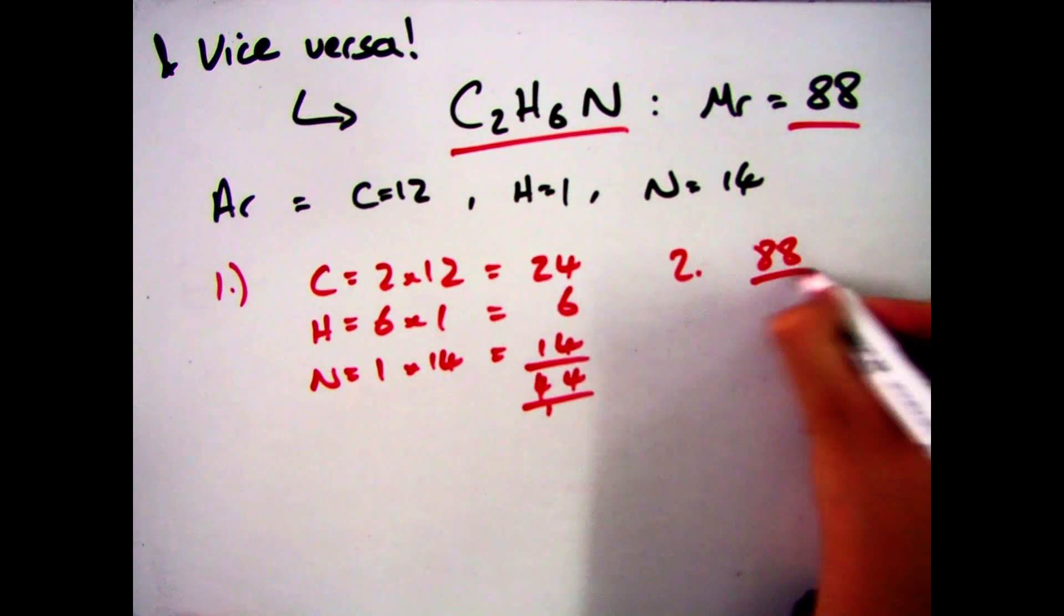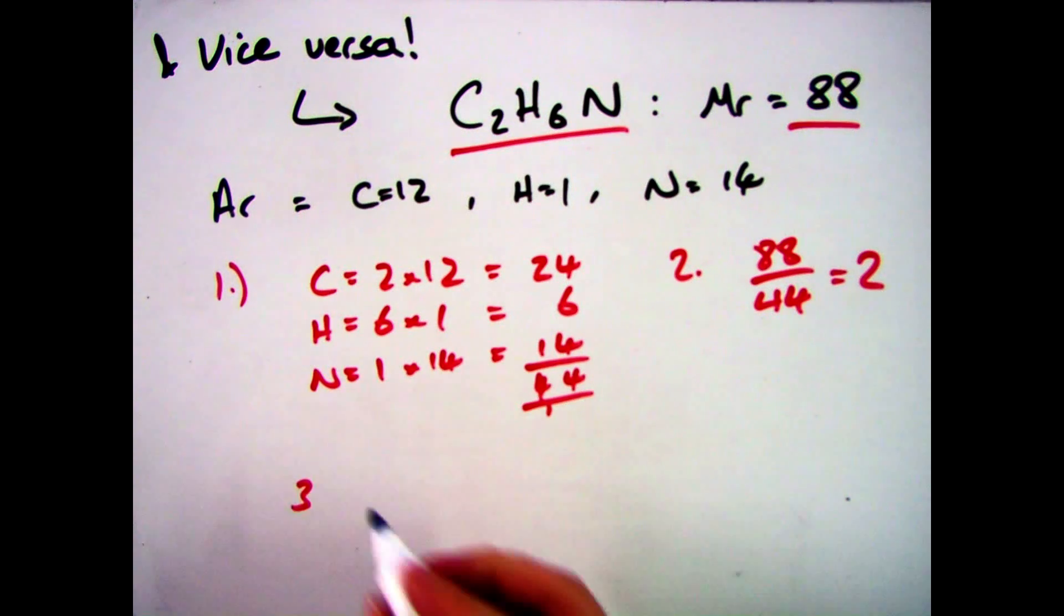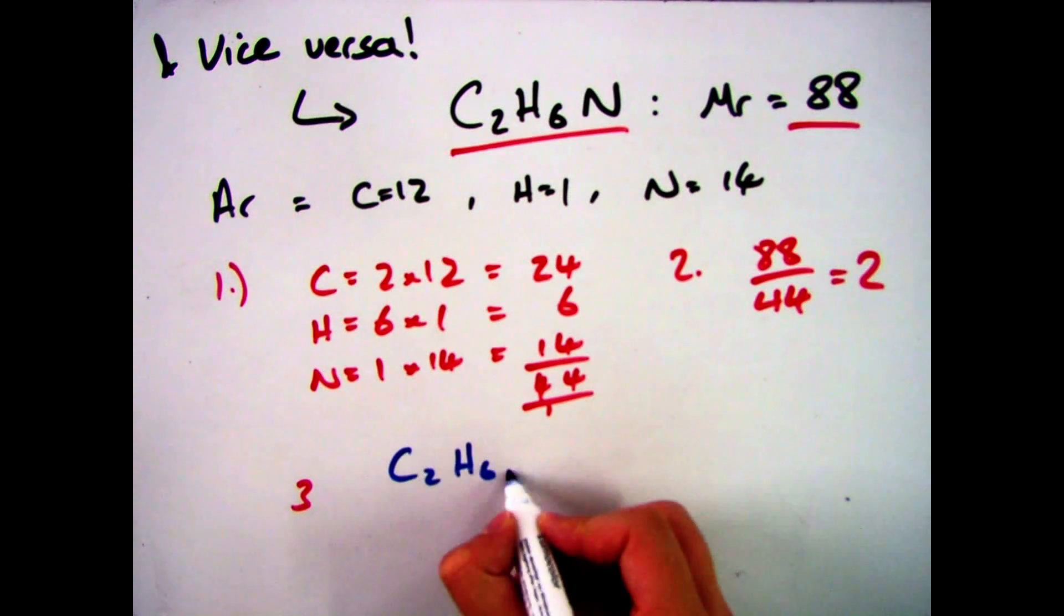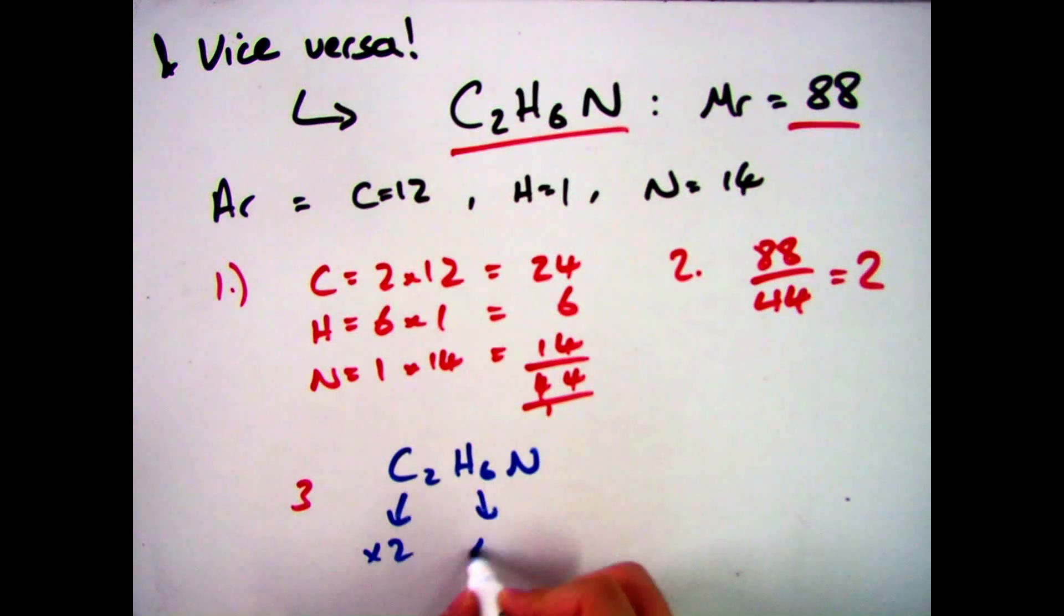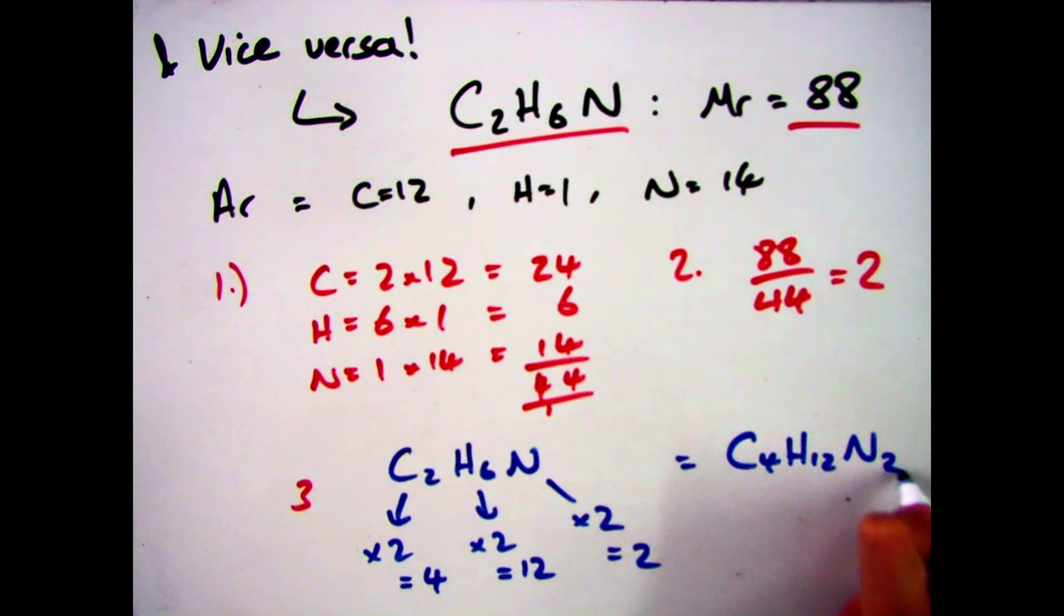So the next step is, how many times does that 44 go into 88? So 88 divided by 44 gives me 2, which leaves me with step 3 of multiplying my original compound by 2. So C2H6N times by 2 gives me C4H12N2.